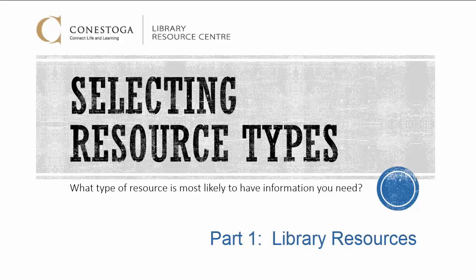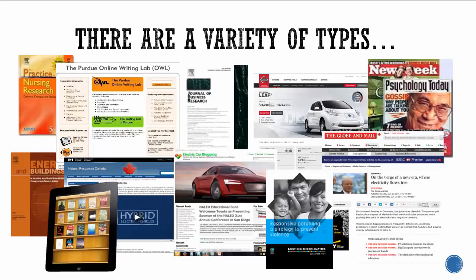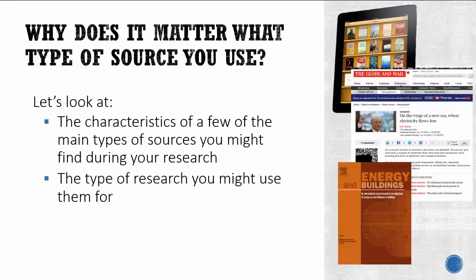Selecting resource types. What type of resource is most likely to have information you need? When you search the library as well as the internet, you'll find a variety of types of sources are available. Why does it matter what type of source you use? We'll take a look at the characteristics of a few of the main types of sources you might find during your research and the type of research you might use them for.